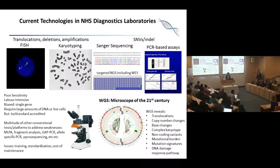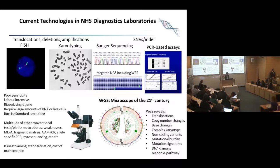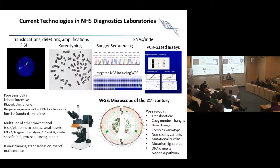Current technologies in the NHS, I'm afraid to say, are very much dating from almost the last century. We're using a variety of different technologies to reveal different genetic abnormalities. For those who are not geneticists in the audience, there are different types of mutations — sometimes chromosomes are missing, sometimes just base pairs are changing. We need to reveal those different mutations and abnormalities in patients with cancer, and that's becoming increasingly complex and complicated.